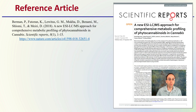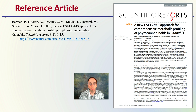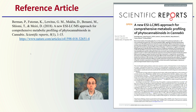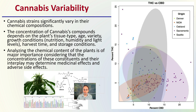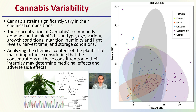Starting with the first reference article, I try to give you that first page, the proper citation, and a direct link so you can investigate it further. Looking at cannabis variability — these methods are trying to assess the variability within cannabis in general.